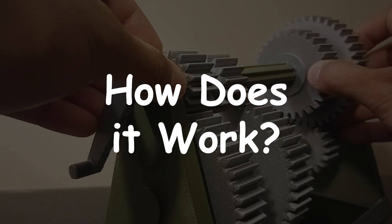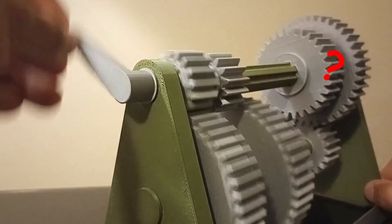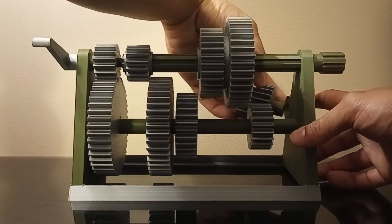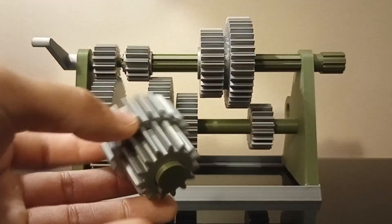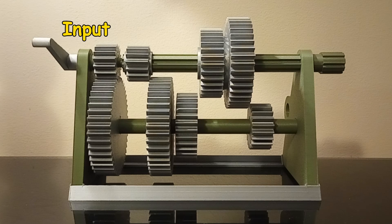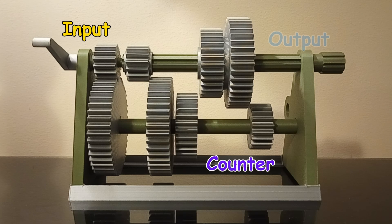So how does it work then? Let's first get familiar with the components, and for simplicity's sake, I'll remove the gears here in the back and save them for later, leaving us with three sections to pay attention to only: the input section, counter section, and output section.